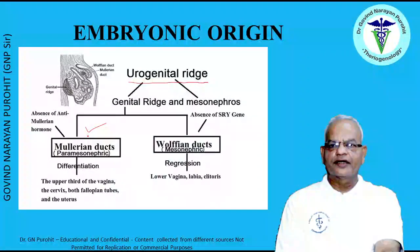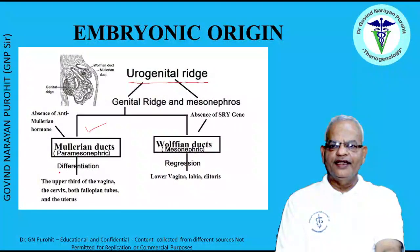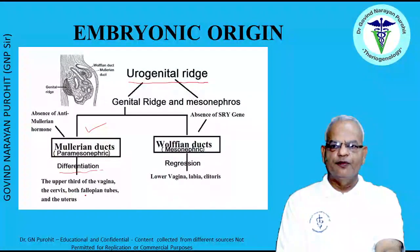The Müllerian duct, also known as the paramesonephric duct, develops in the female because of the absence of anti-Müllerian hormone. The Müllerian duct differentiates to form the upper third of the vagina, the cervix, both fallopian tubes, and the uterus.